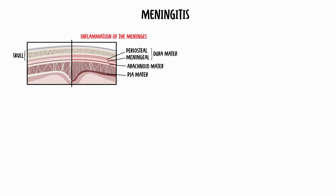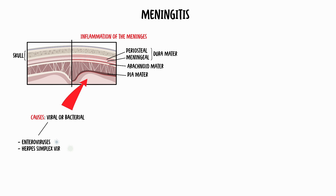The final clinical anatomy we will discuss is meningitis — inflammation of the meninges. Meningitis is most commonly viral or bacterial in origin, although fungal, parasitic, and non-infectious causes are possible. The most common causes of viral meningitis are enteroviruses and herpes simplex virus, whereas bacterial meningitis is commonly caused by pathogens such as Neisseria meningitidis and Streptococcus pneumoniae.